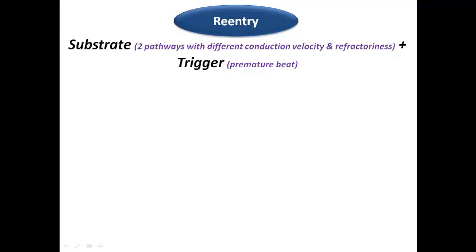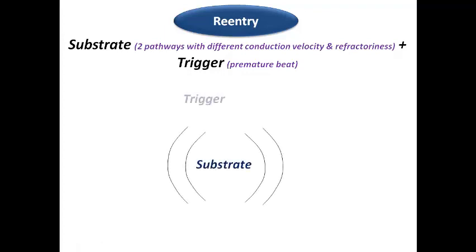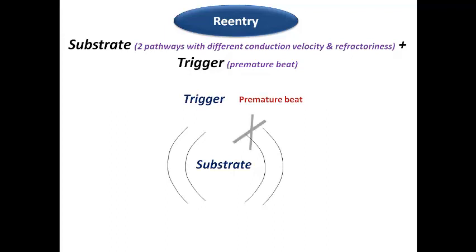We need a substrate, which includes two pathways with differences in conduction velocity and refractory period, and a trigger, which is usually a premature beat. For example, we have two pathways and a premature beat that is blocked in one of them because that pathway has a longer refractory period, so it is blocked and the impulse travels antegrade slowly down the other pathway which has a shorter refractory period.